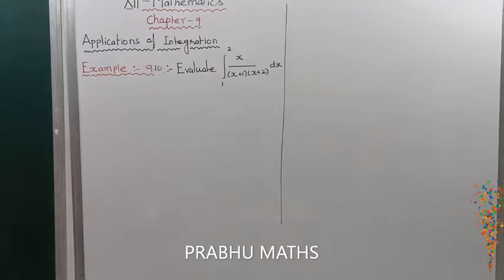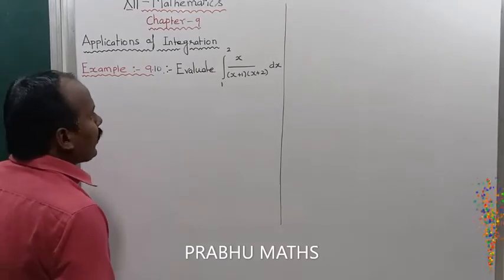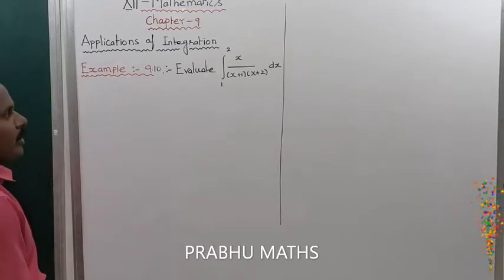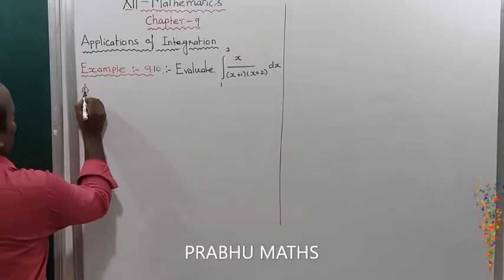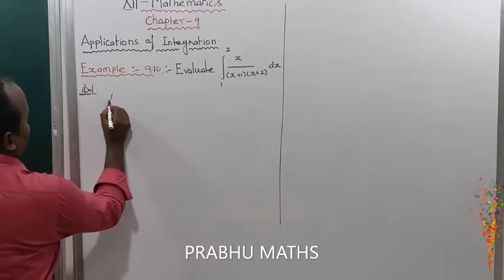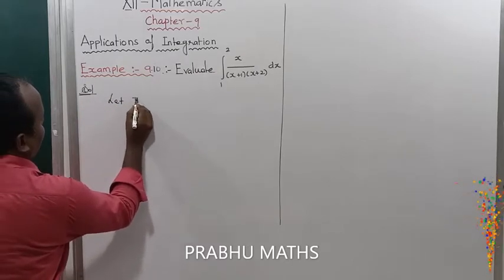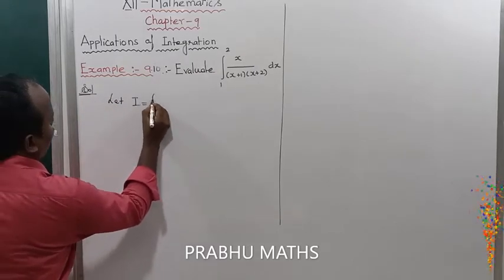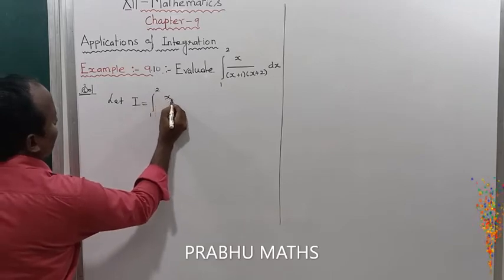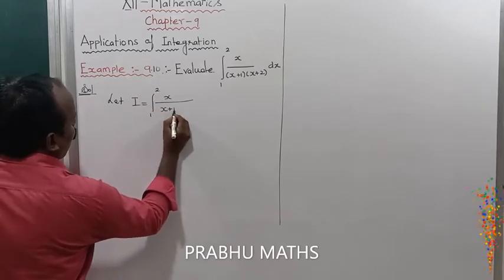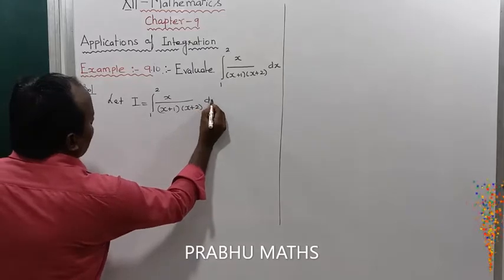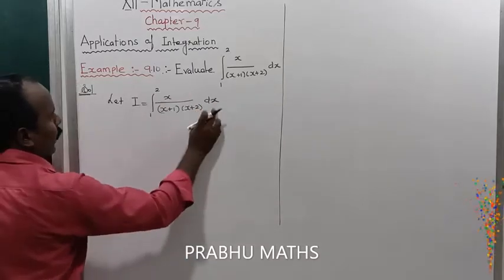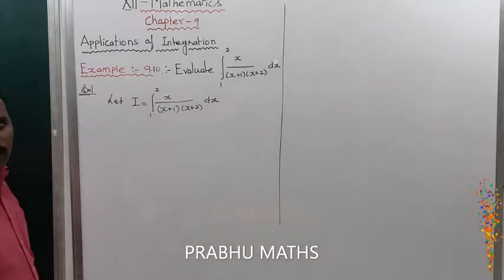Example 9.10: Evaluate the integral from 1 to 2 of x divided by (x+1)(x+2) dx. Solution: Let us consider the given value as I, that is equal to the integral from 1 to 2 of x divided by (x+1)(x+2) dx. Now this function is considered as f(x).